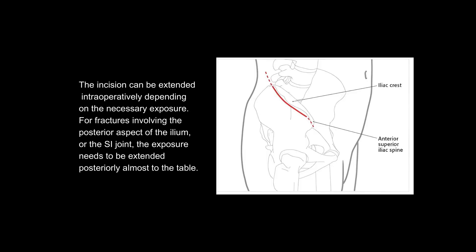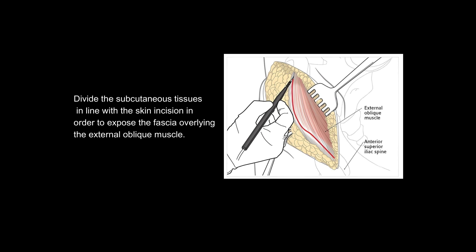The incision can be extended intraoperatively depending on the necessary exposure. For fractures involving the posterior aspect of the ilium or the SI joint, the exposure needs to be extended posteriorly almost to the table. Divide the subcutaneous tissues in line with the skin incision in order to expose the fascia overlying the external oblique muscle.